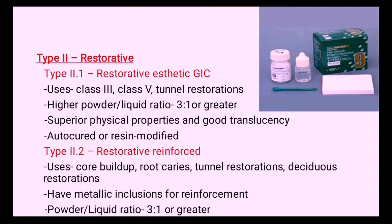Type 2 glass ionomer cement is divided into two parts: Type 2.1, restorative aesthetic GIC, and Type 2.2, restorative reinforced GIC. Type 2.1 is used for Class 3, Class 5, and tunnel restorations. It has a high powder-liquid ratio of 3:1 or greater, superior physical properties, good translucency, and is auto-cured or resin modified.